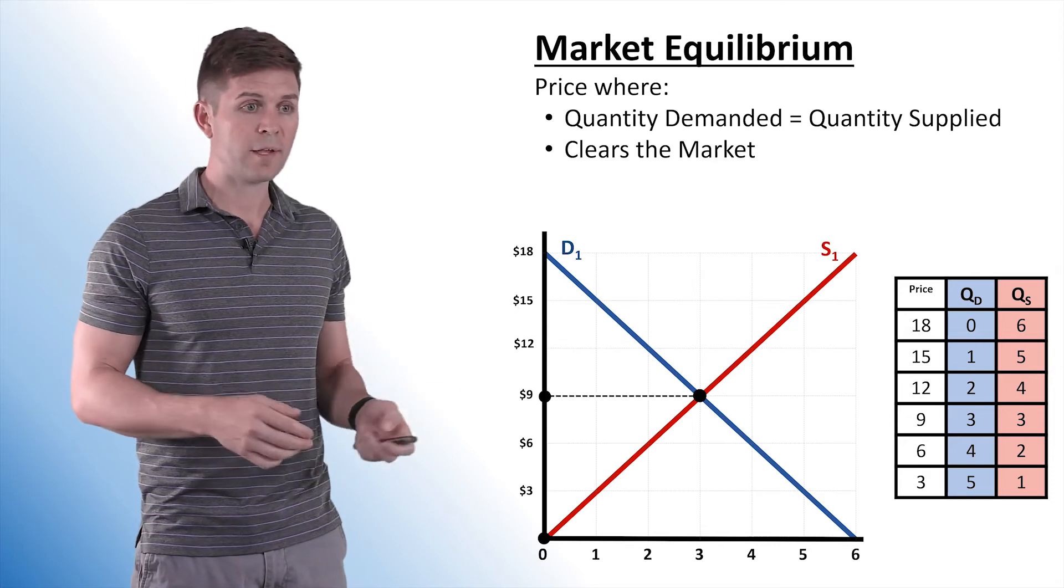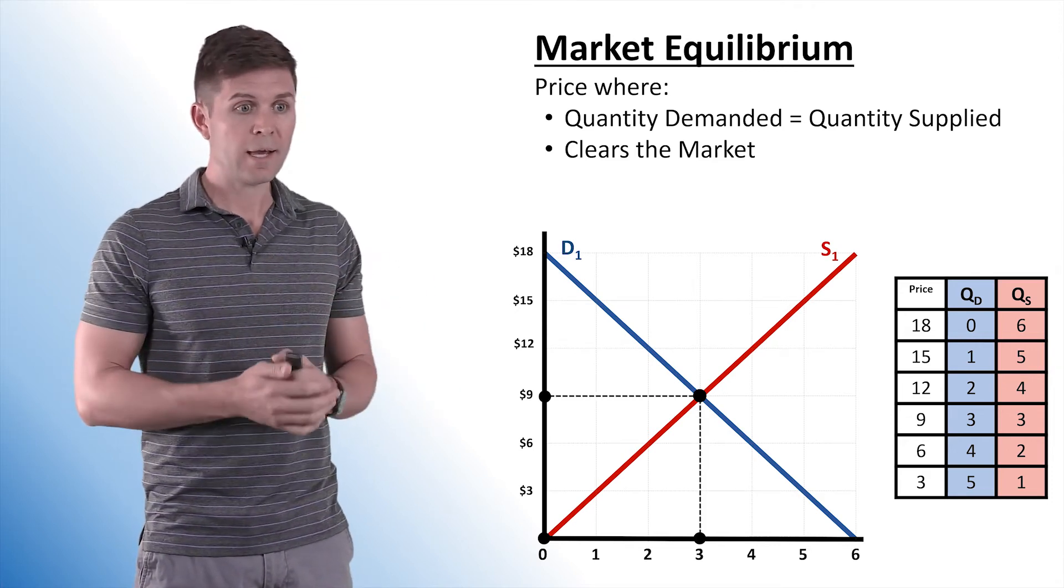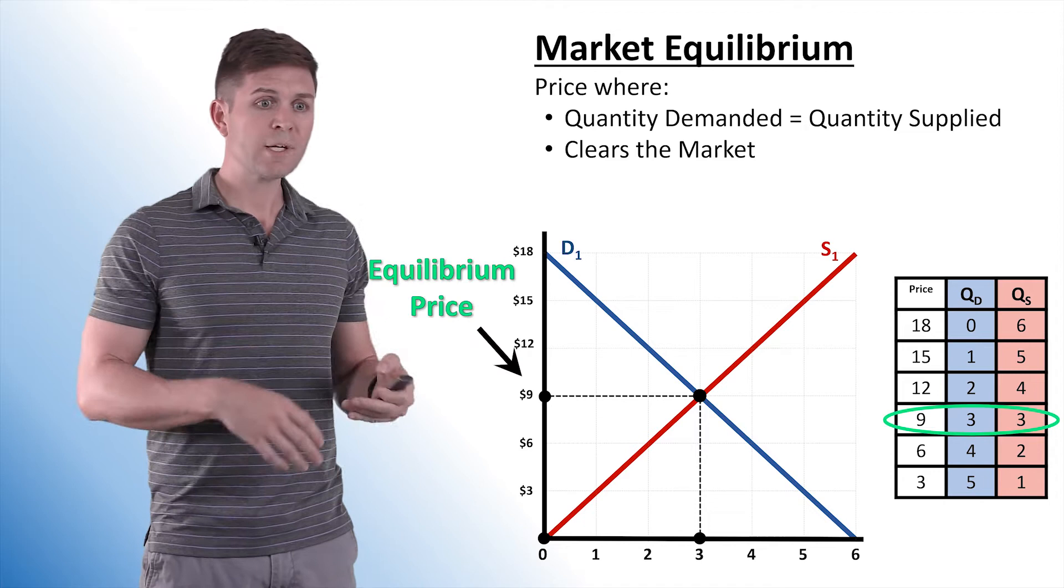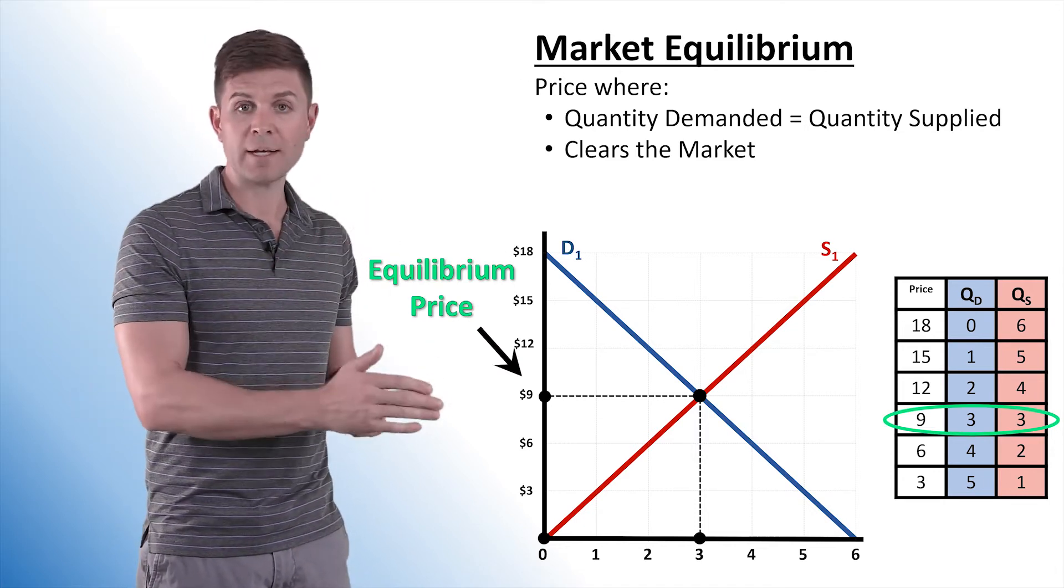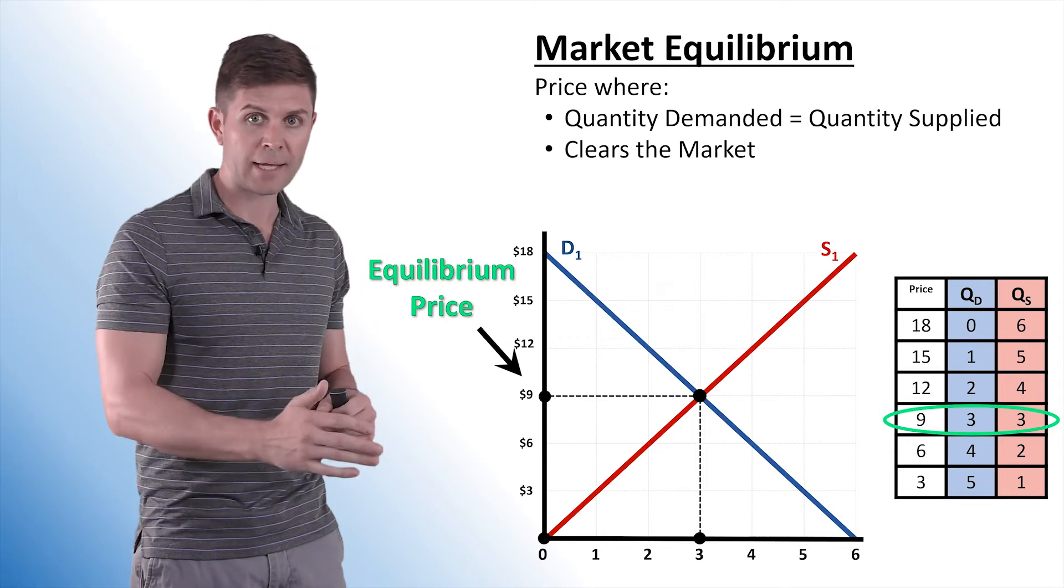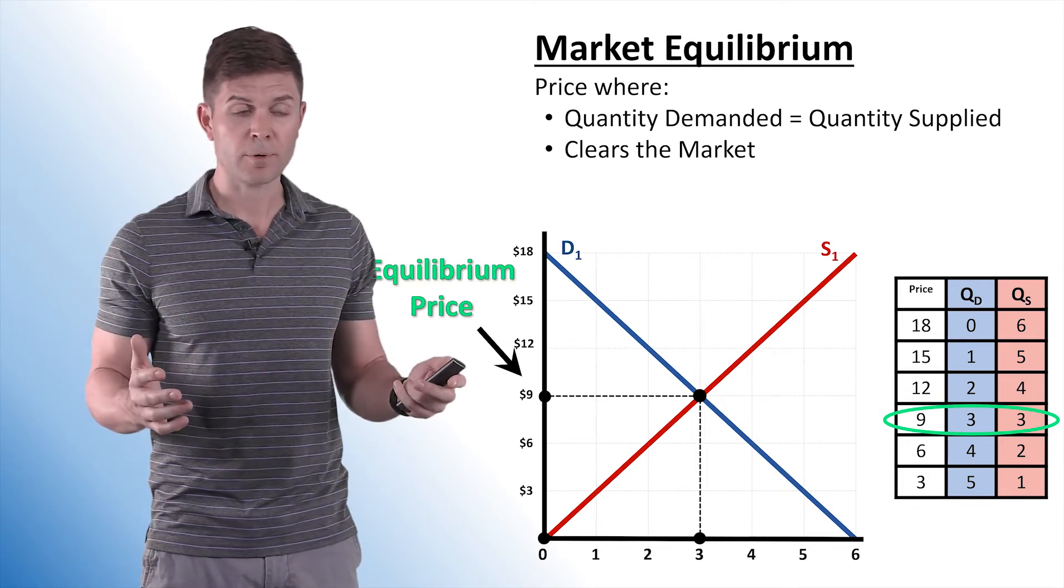So at this point, we can see that our price is $9 and our quantity is 3. If we look at the model to the right, it shows us at $9, the quantity demanded is 3, the quantity supplied is 3. So that gives us our equilibrium price.